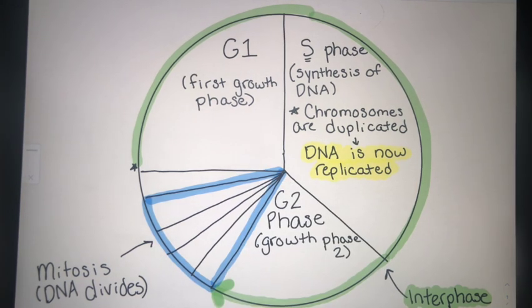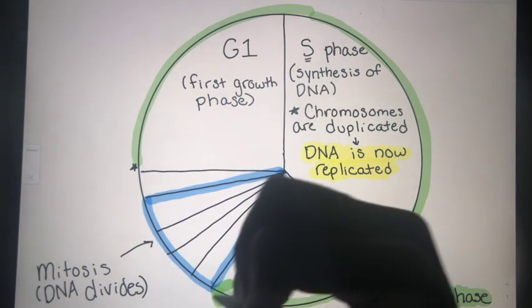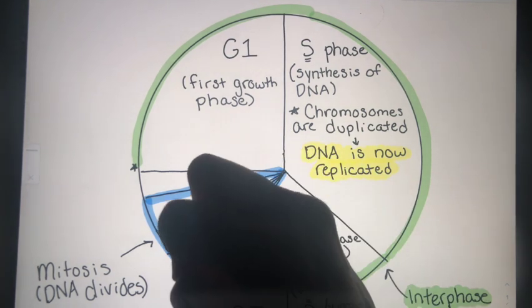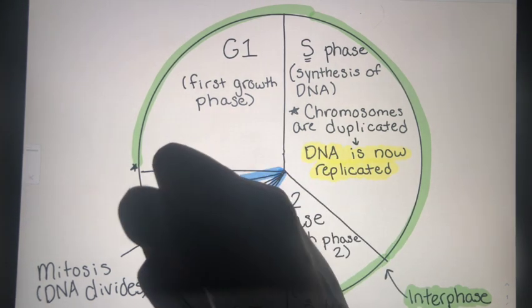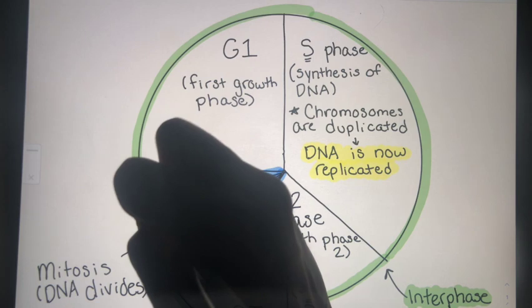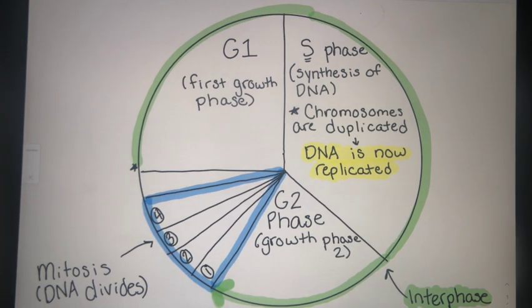Relatively even sections. But then I can label them one, two, three, and four to represent the four stages of mitosis.